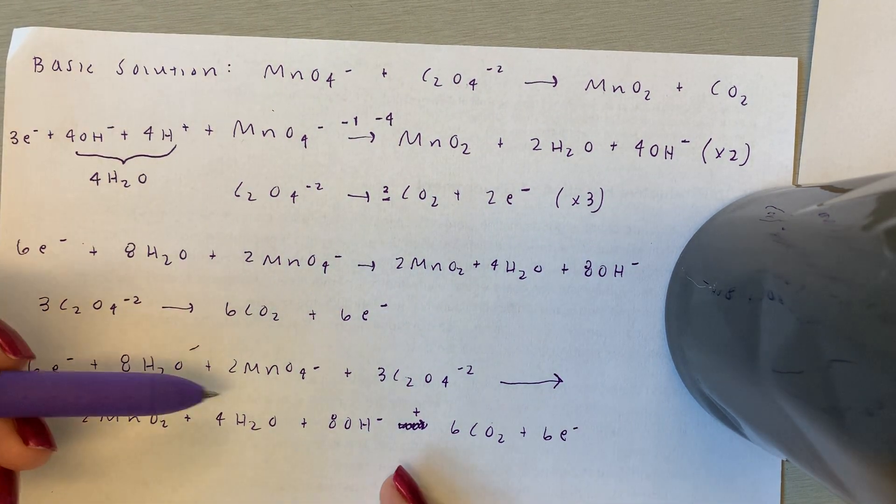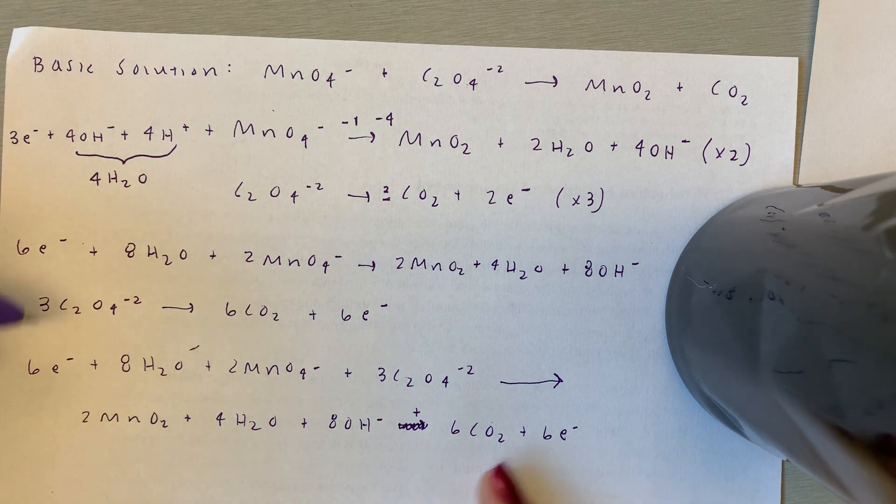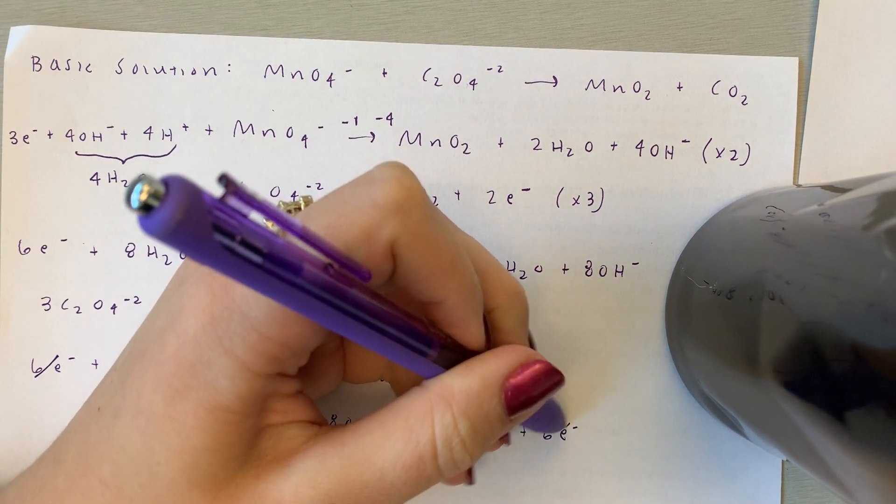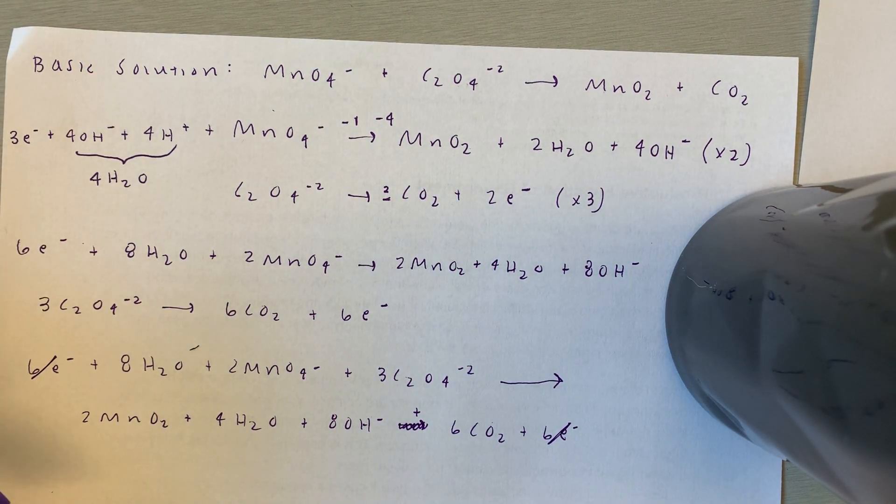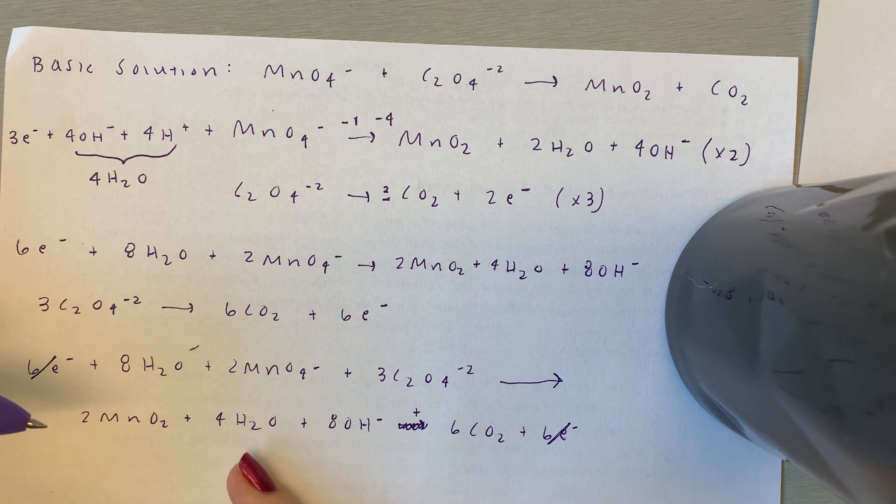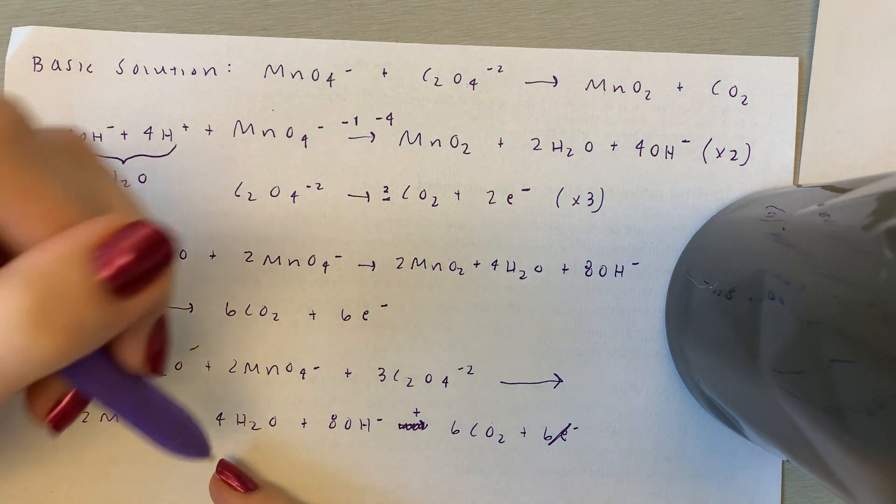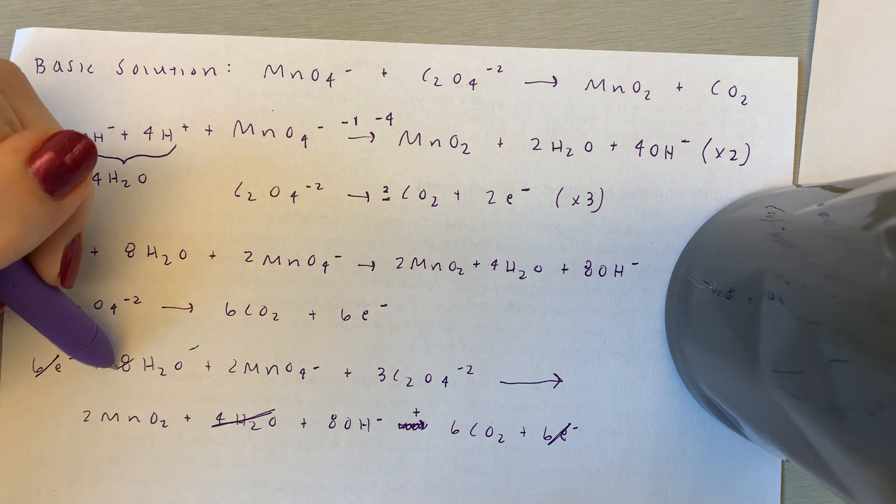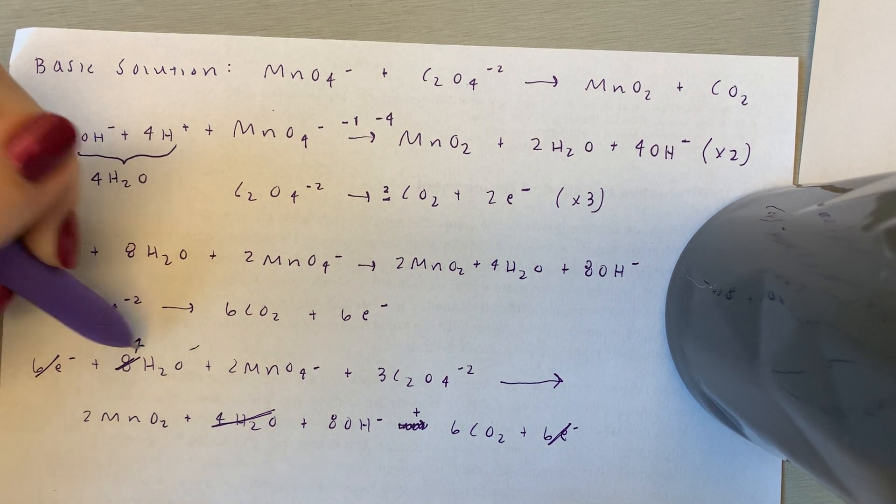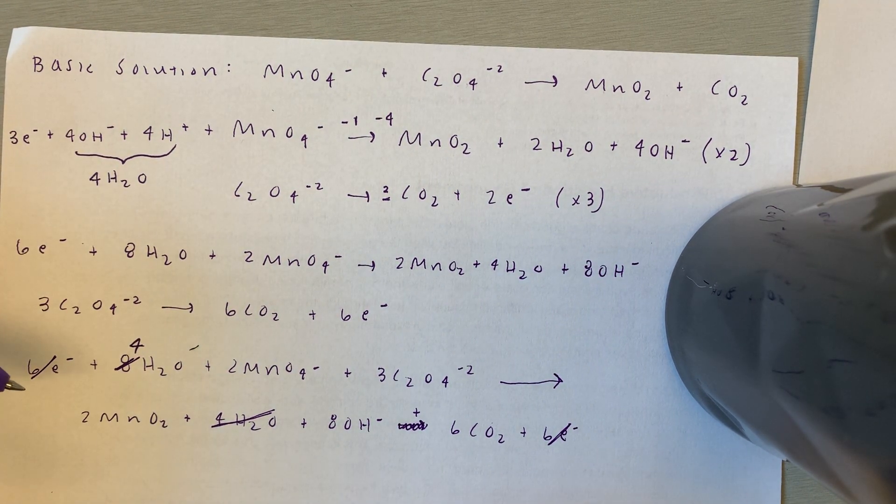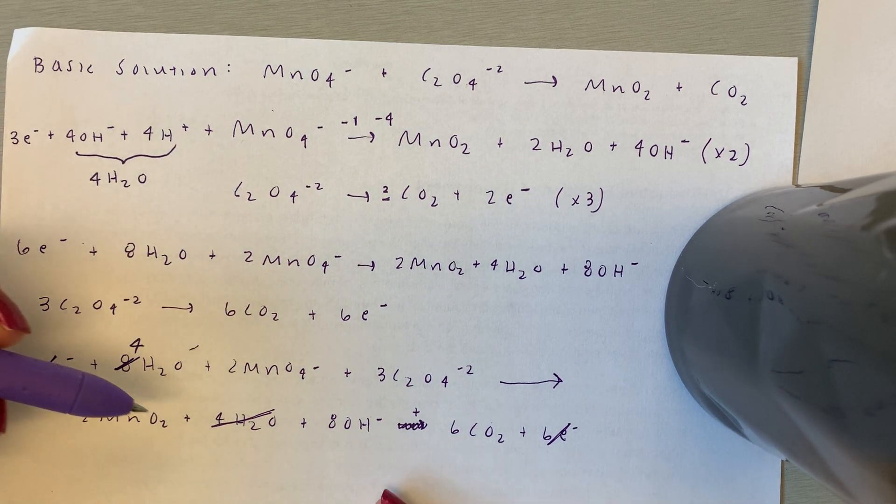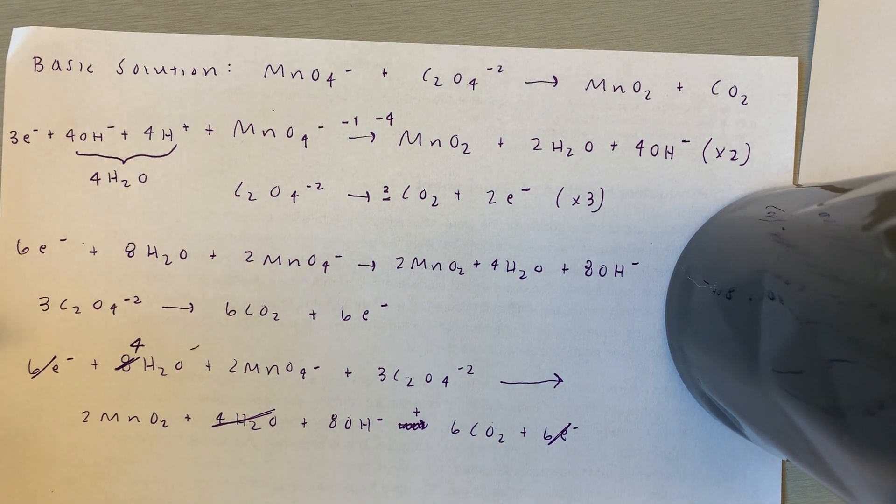So now, we can cancel out some stuff that we don't need. So we have six electrons on either side, that one's the given, keeps us on track. We have 4 on this side and 8 on this side, so we can get rid of all this and make that 4. And that's it. We don't have to cancel out anything else.